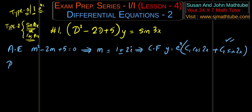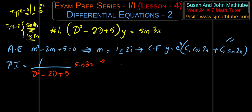Now comes the particular integral. We write it as 1 over (D squared minus 2D plus 5) of sine 3x. The method is different here. Look at the argument: 3 is along with x. Now square that number — 3 squared is 9 — and take the negative, so you get minus 9. We will replace D squared with minus 9, and don't touch D — just leave it alone.